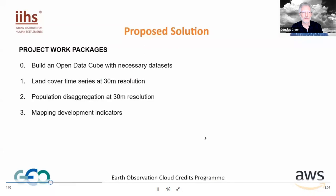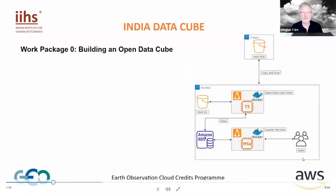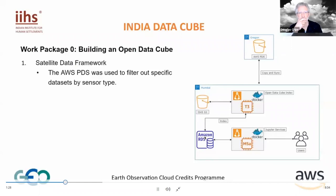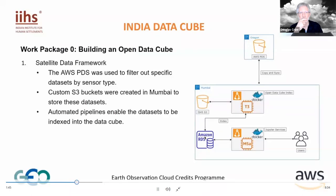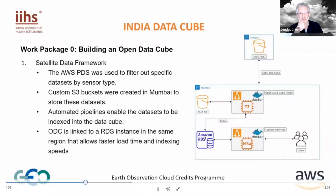Our project consists of four work packages. In Work Package Zero, we are using the Open Data Cube framework to populate two types of datasets: satellite imagery from the AWS Open Data Archive, and census and sample survey data as rasters. We build a satellite data framework from the AWS Public Data Store, filtering specific datasets by sensor types — Landsat 5, Landsat 8, and the Sentinel series. The custom S3 buckets are recreated in a region closer to us in Mumbai. This has two advantages: cost monitoring and improved transport speeds. Automated pipelines are also created to enable datasets to be indexed directly into the data cube from S3 buckets, and an RDS instance is used to index datasets from the Open Data Cube, enabling faster load times and indexing speeds.